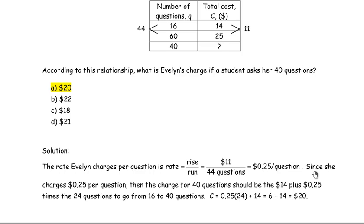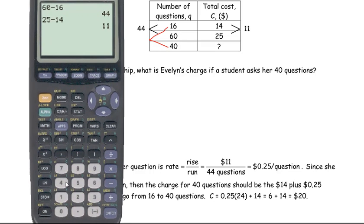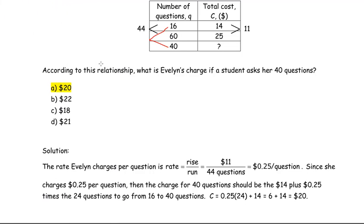Since she charges $0.25 per question, we want to find the charge for 40 questions. I'm going to show this two different ways. To go from 16 to 40, that's an extra 24 questions—40 minus 16. So that's 24 extra questions she's being asked above the 14.